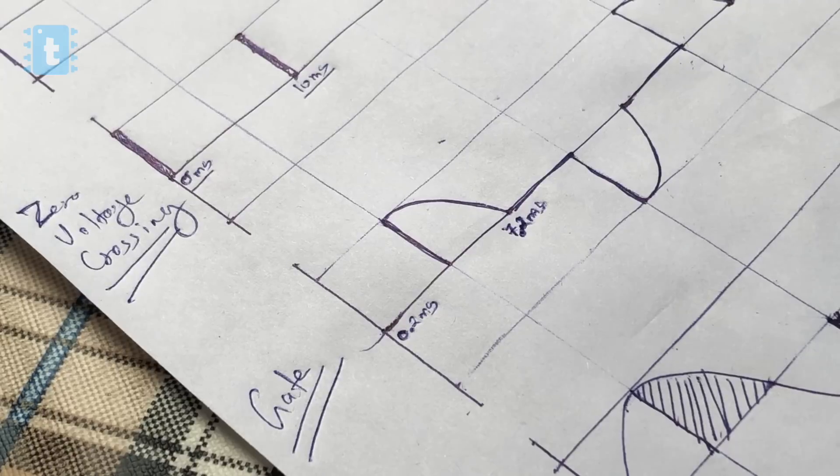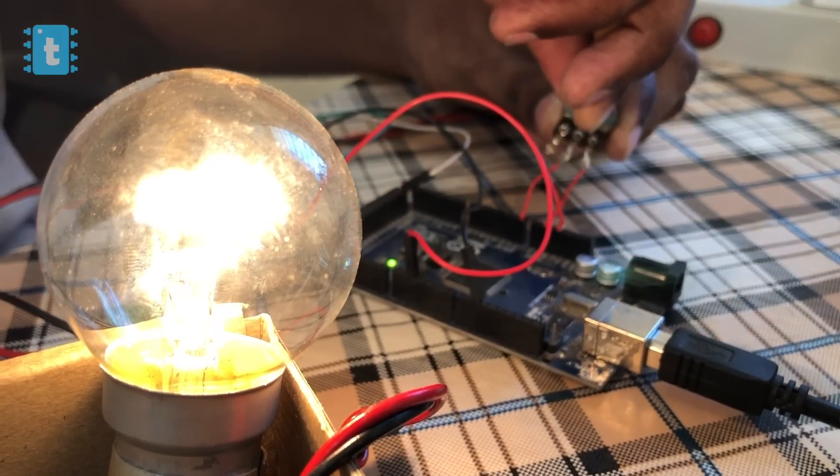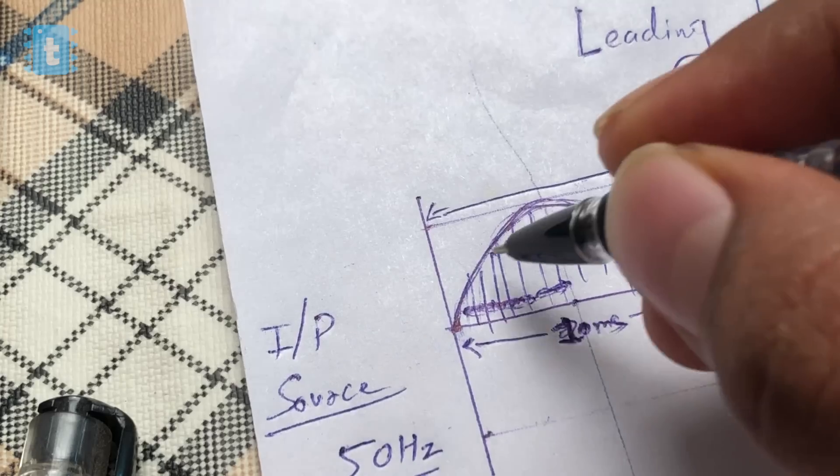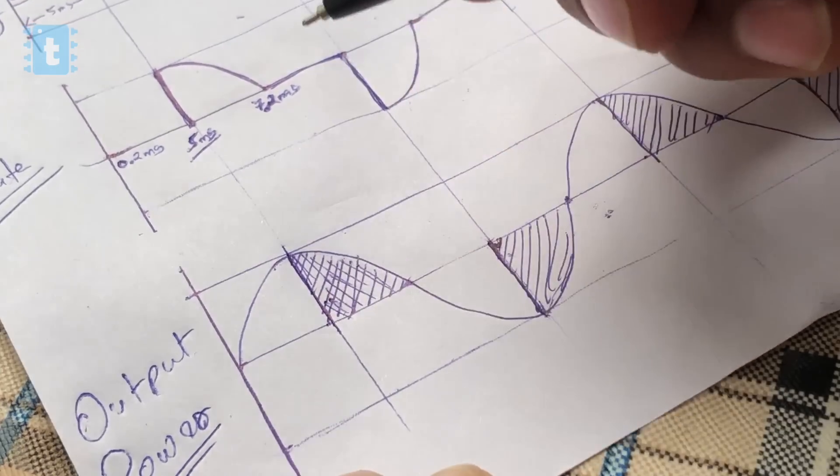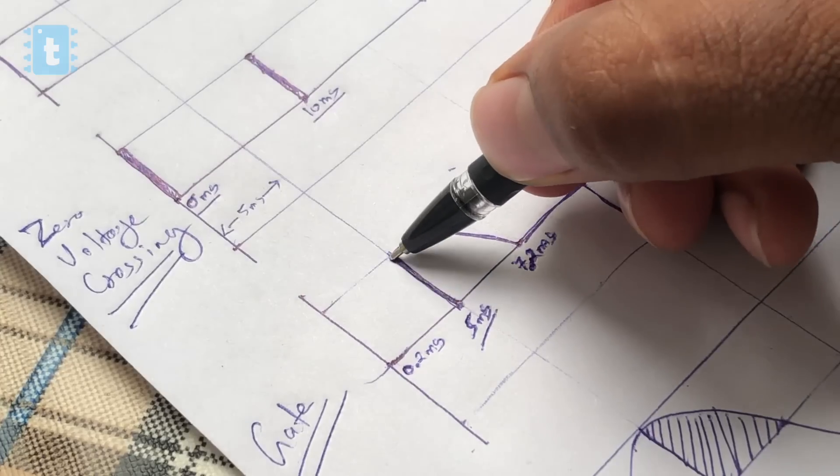Let's take an example - we need to dim the bulb at 50% brightness and for that we need to deliver only half power to it. So rather than delivering the power for whole 10 millisecond, we need to deliver it only for 5 millisecond in half cycle. So what we will do - as soon as zero cross detector signal is received in the Arduino, after 5 millisecond we will be triggering the gate pin of TRIAC using Arduino.